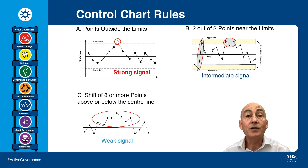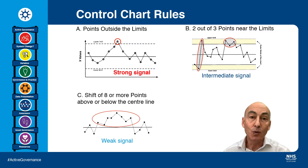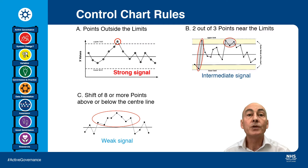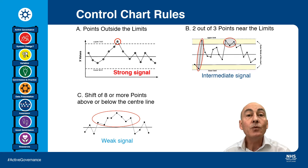When Shewhart developed the control chart, he used just one rule — points outside the control limits — as a signal for special cause. This has become known as Rule 1. Many statisticians have added additional rules in order to increase the sensitivity of the control chart, but there's a danger with this, because you also increase the number of false alarms. Shewhart was very interested in the economic worth of finding these special cause signals, and he didn't want to waste people's time going to look for what was actually just common cause variation or noise.